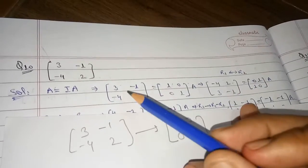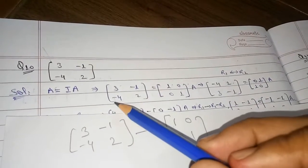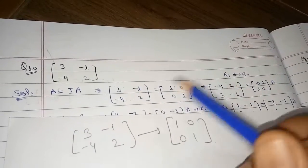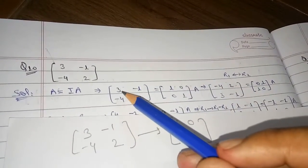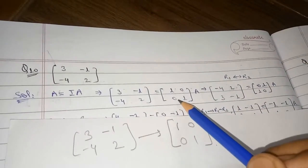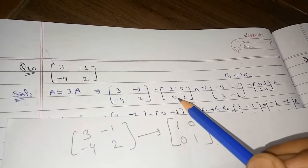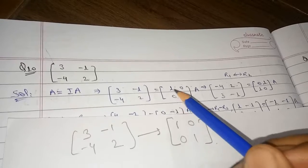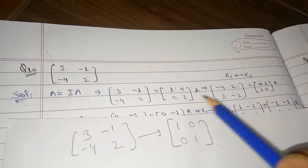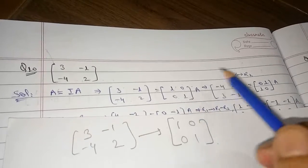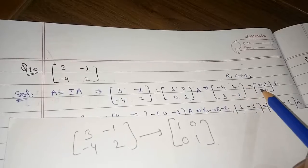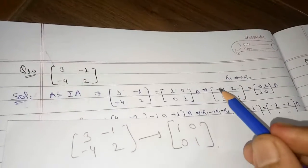We apply the row transformation to interchange R1 and R2. After the interchange, row 1 becomes [-4, 2] and row 2 becomes [3, -1]. On the right-hand side identity matrix, [1, 0] moves to row 2 and [0, 1] moves to row 1.